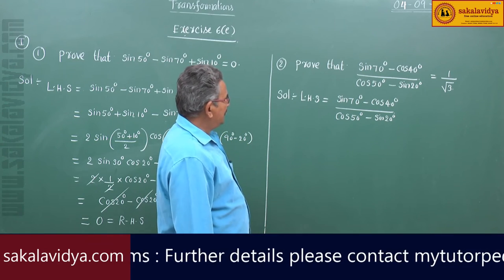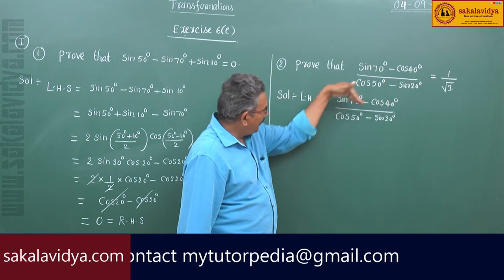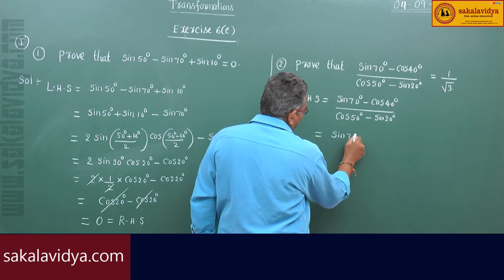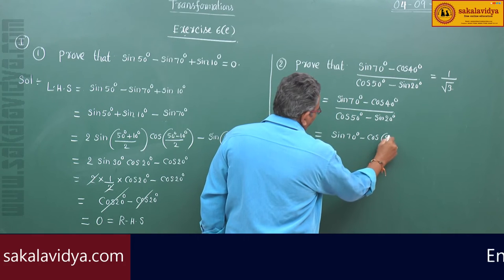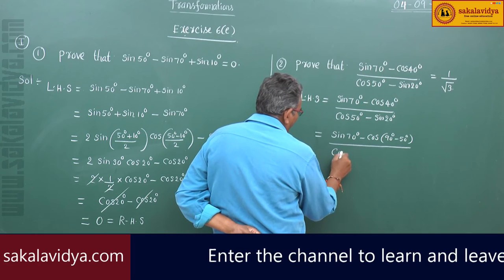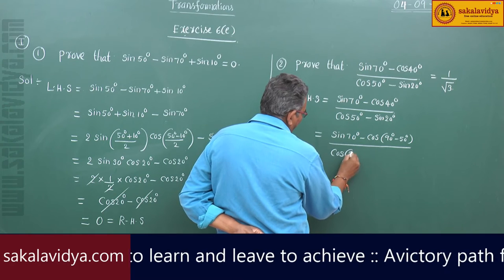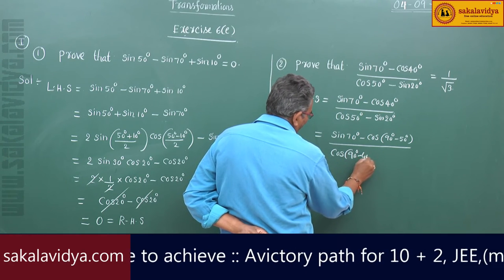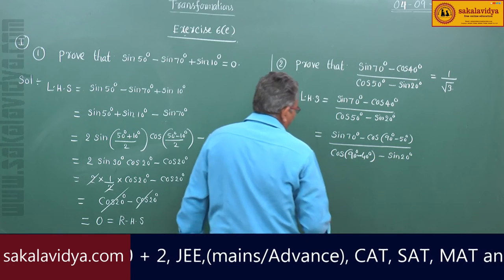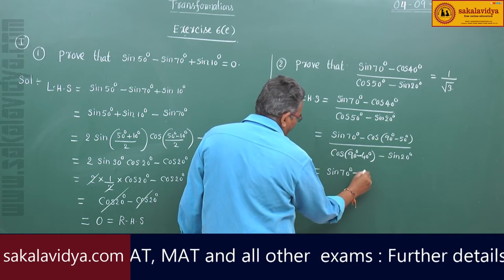We can change sin70° and also cos40° and cos50°. So sin70° minus cos(90° minus sin20°) minus sin20°. This simplifies the numerator to sin70° minus sin20°, and the denominator to sin40° minus sin20°.